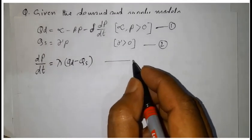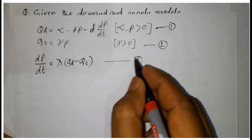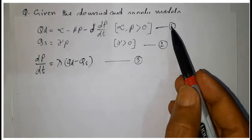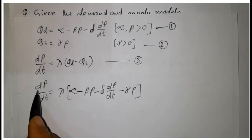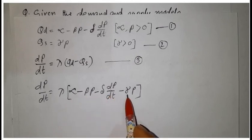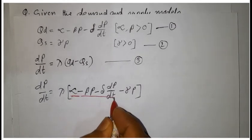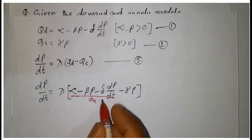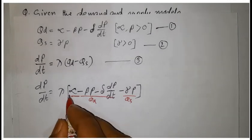Now substituting equations 1 and 2 into equation 3, we get dP/dt equal to lambda times (alpha minus beta·P minus delta·(dP/dt) minus gamma·P). This is the value for Q_D and this is the value for Q_S.